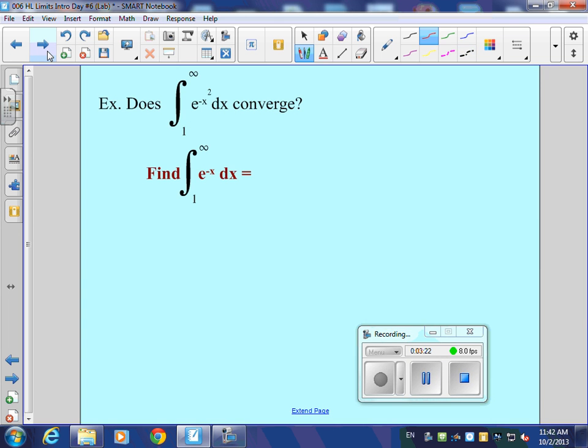So here's what we're going to do. We're going to prove that this does or does not converge. Does integral from one to infinity e to the negative x squared dx converge? We're going to do this in two steps. Step one.